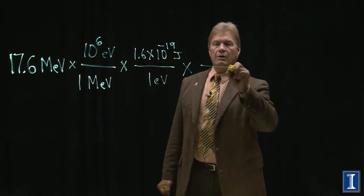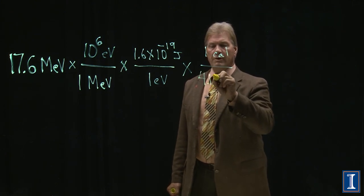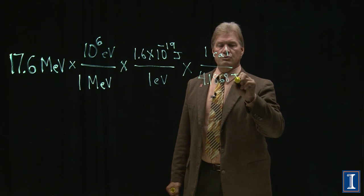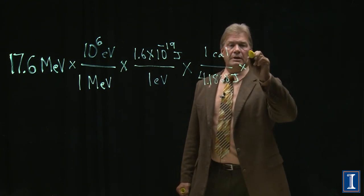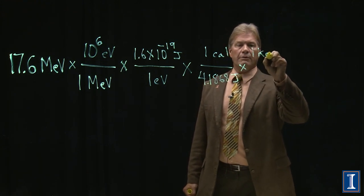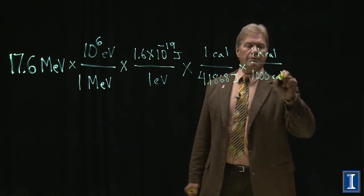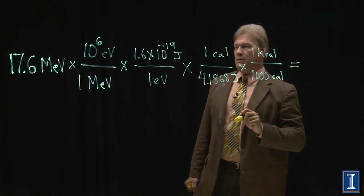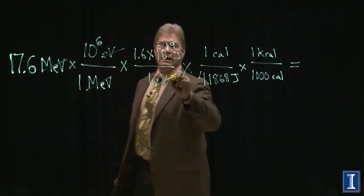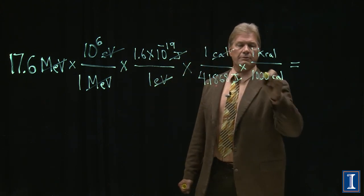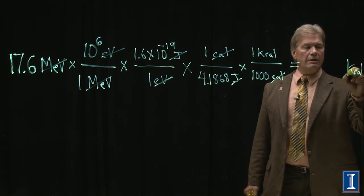And if we take the other definition I gave you, where it was one calorie, with a small c, was 4.1868 joules. Pretty close, except we're going to need that one kilocalorie is equal to 1,000 calories. And then, if I did this right, MeV cancels, EV cancels, joules cancel, calories cancel, and my number will be in kilocalories.